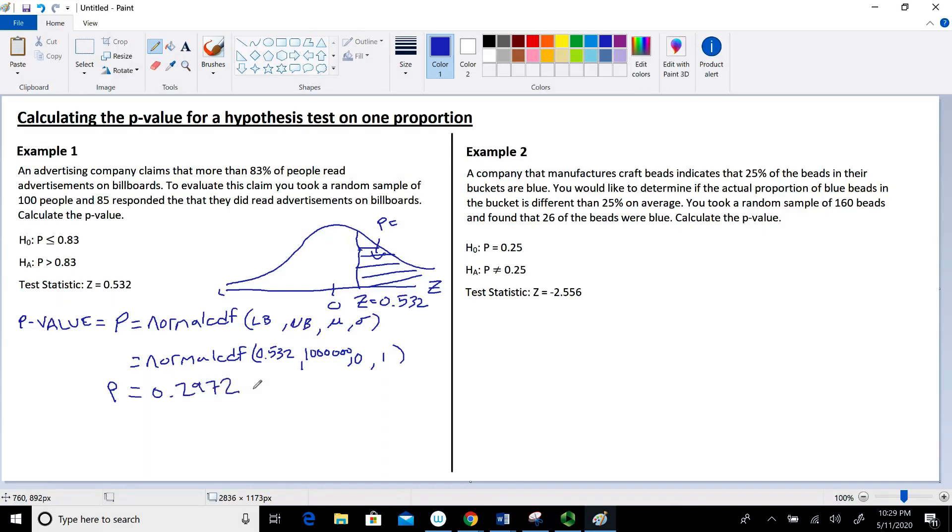With p-values, the larger the p-value, the less likely we are to reject our null hypothesis. Using the p-value approach, if our p-value is less than or equal to our alpha value (level of significance), we reject the null hypothesis. Typical alpha values are 0.1, 0.05, or 0.01. Since 0.29 is much larger than any of those, we fail to reject the null hypothesis.